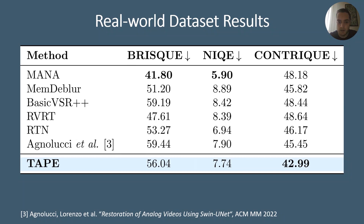The table shows the quantitative results for the real-world dataset. Since the real-world videos don't have a ground-truth version, we have to rely on no-reference image quality assessment metrics to evaluate the performance of our approach. We can see that TAPE outperforms all the baselines for the CONTRIQUE metric, while MANA achieves the best performance in terms of the BRISQUE and NIQE metrics. However, the qualitative results show that MANA tends to add high-frequency artifacts to the restored videos, and we suppose that BRISQUE and NIQE are misled by these artifacts, mistaking them for high-frequency details typical of high-quality images.